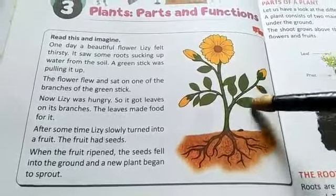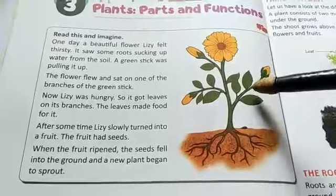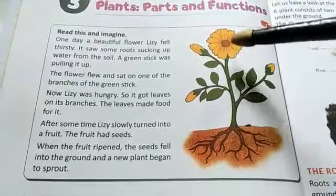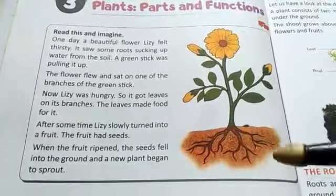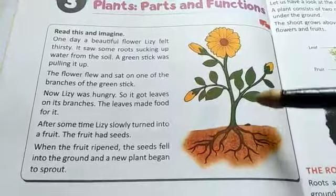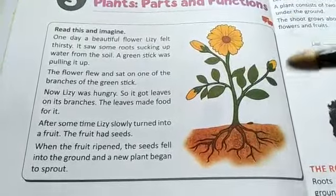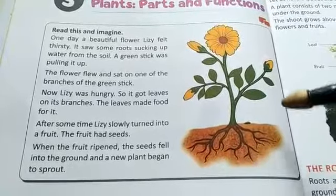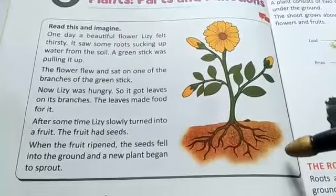One day Lizzie felt hungry. As she felt hungry, she started growing leaves on the branches. These leaves helped to make food for the plant. After some time, Lizzie slowly turned into a fruit.